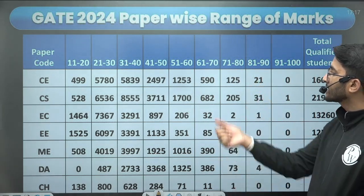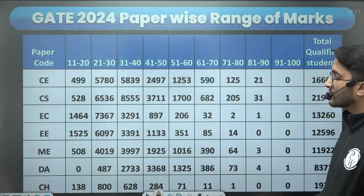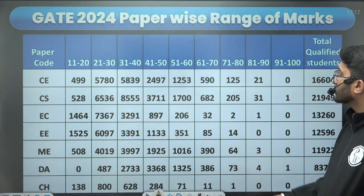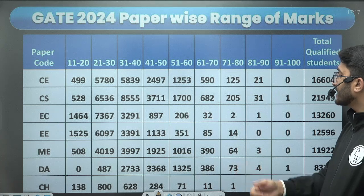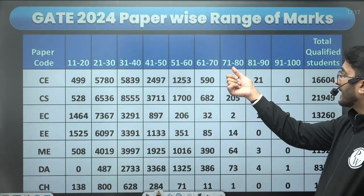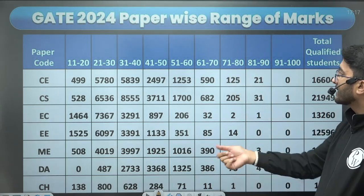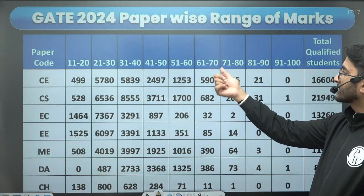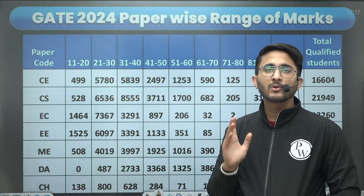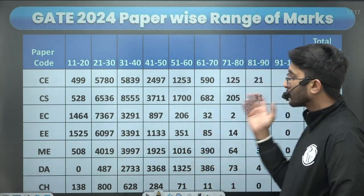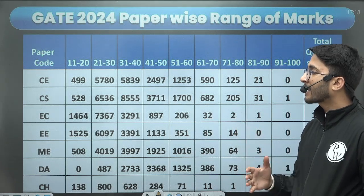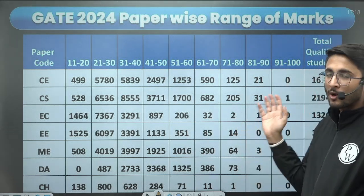For Mechanical, 91 to 100 no students, 81 to 90 three students, and 71 to 80 sixty-four students; 61 to 70, 390 students. For DA, 91 to 100 one student, 81 to 90 four students, and 71 to 80 seventy-three students. For Chemical, the All India Rank 1 is getting marks between 71 to 80, and the other top 11 rankers are in 61 to 70. This is the official data provided by IISc Bengaluru during GATE 2024.